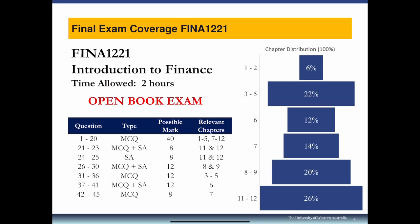Each MCQ question is worth 2 points and each short answer is 4 points. The first 20 questions are all MCQ, drawn randomly from chapters 1 to 5 and 7 to 12 — there are no chapter 6 MCQ questions. After the first 20, there are six sections. Each question was originally a long question with different components but has been decomposed into MCQ or short answer parts, since we can't have you input formulas directly in the exam.